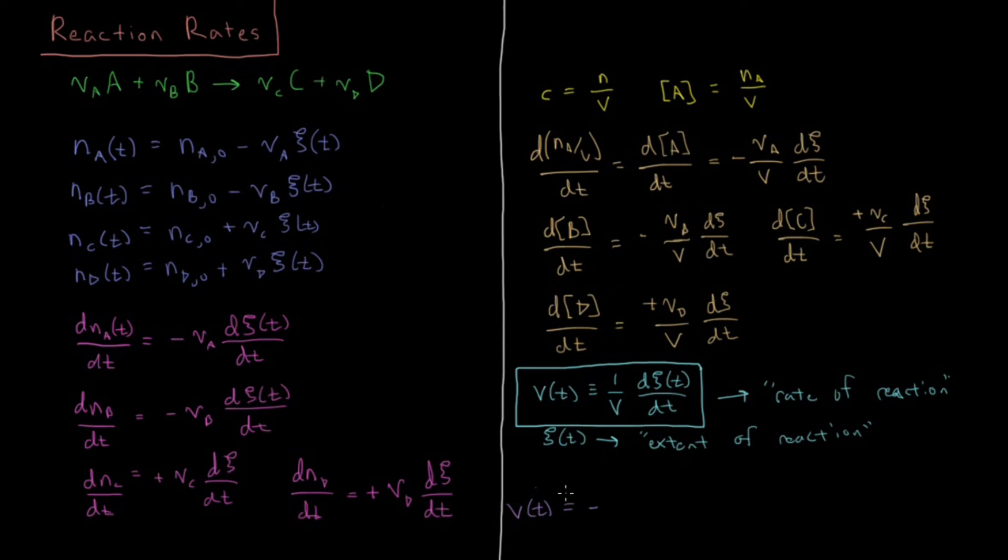So this is going to be equal to minus 1 over nu A, d[A]/dt. It's also equal to minus 1 over nu B, d[B]/dt. But you see with all of these, their stoichiometric coefficient, it's their change in concentration over time divided by their stoichiometric coefficient. So for all of them, you get on an equal footing there because the stoichiometric coefficient just linearly scales the value by whatever it is.